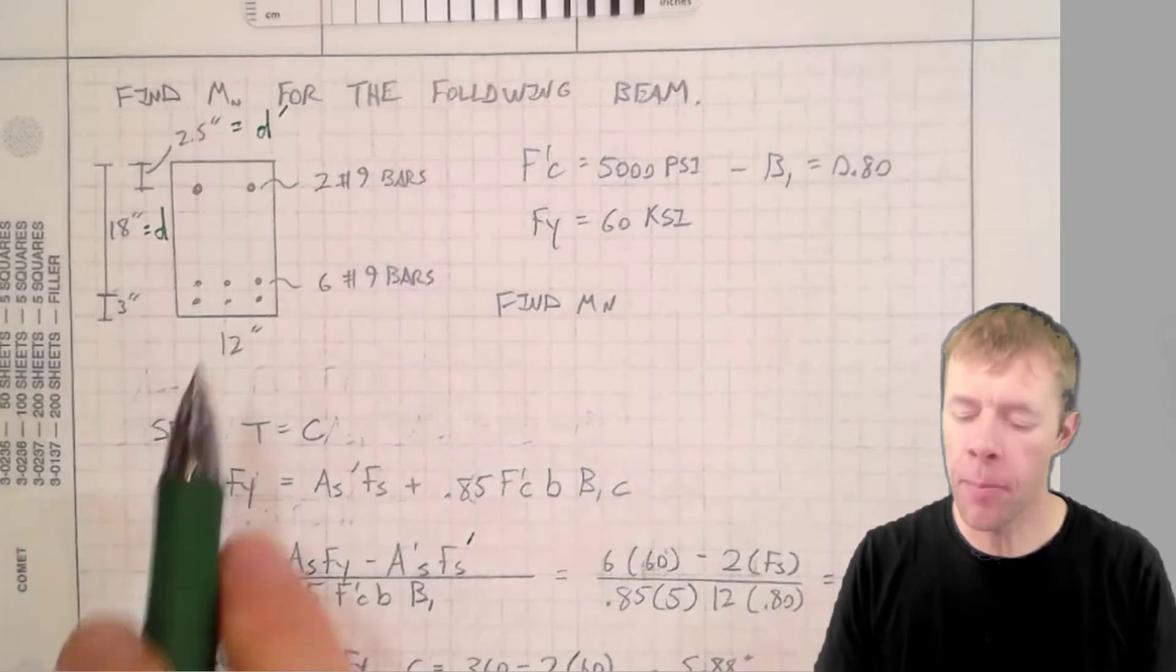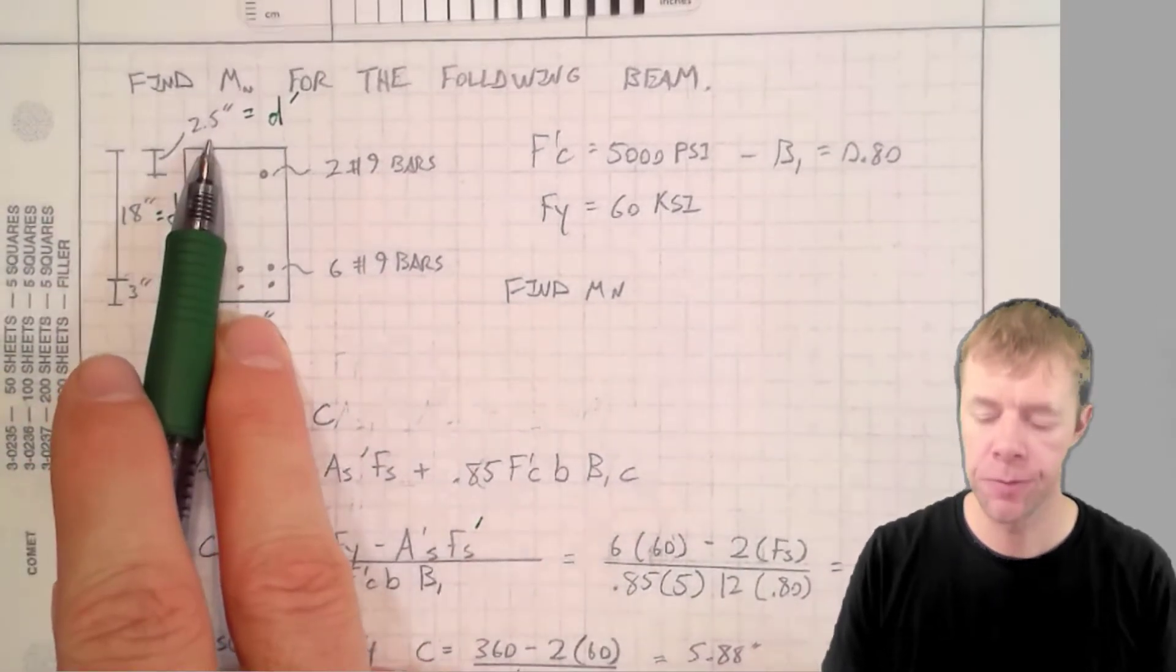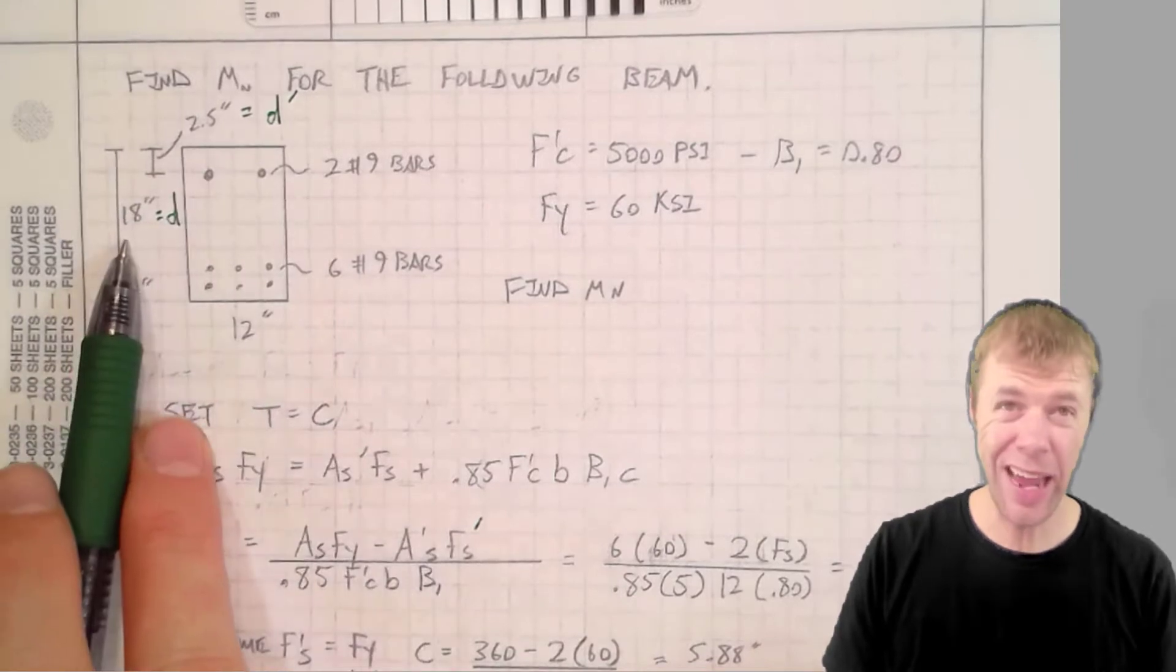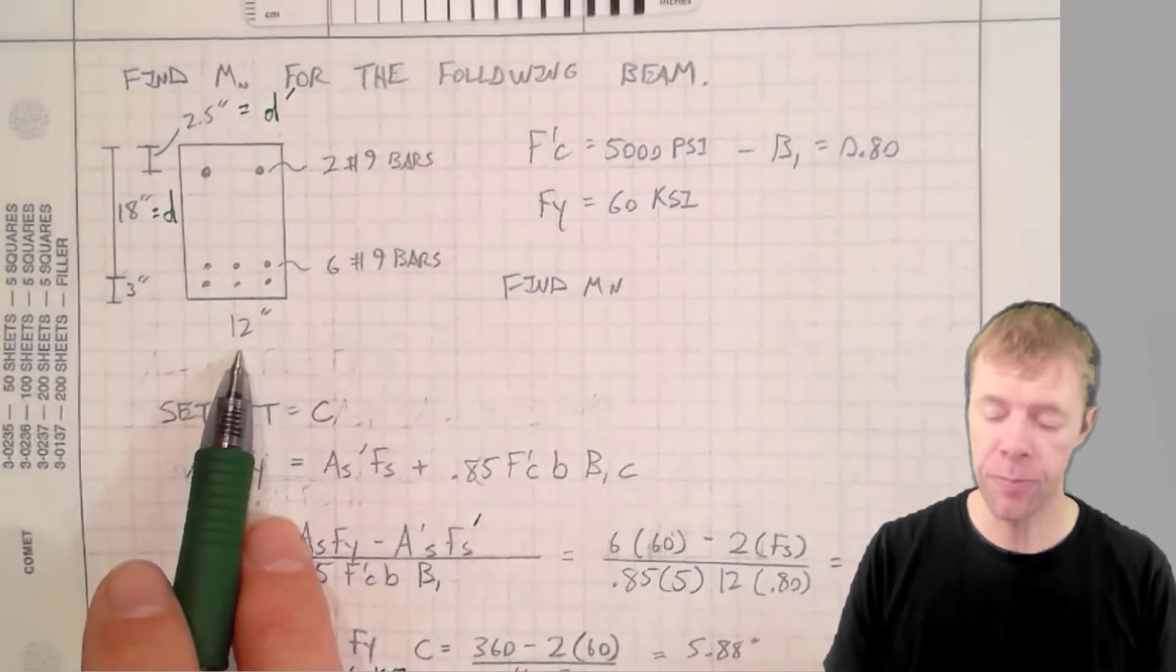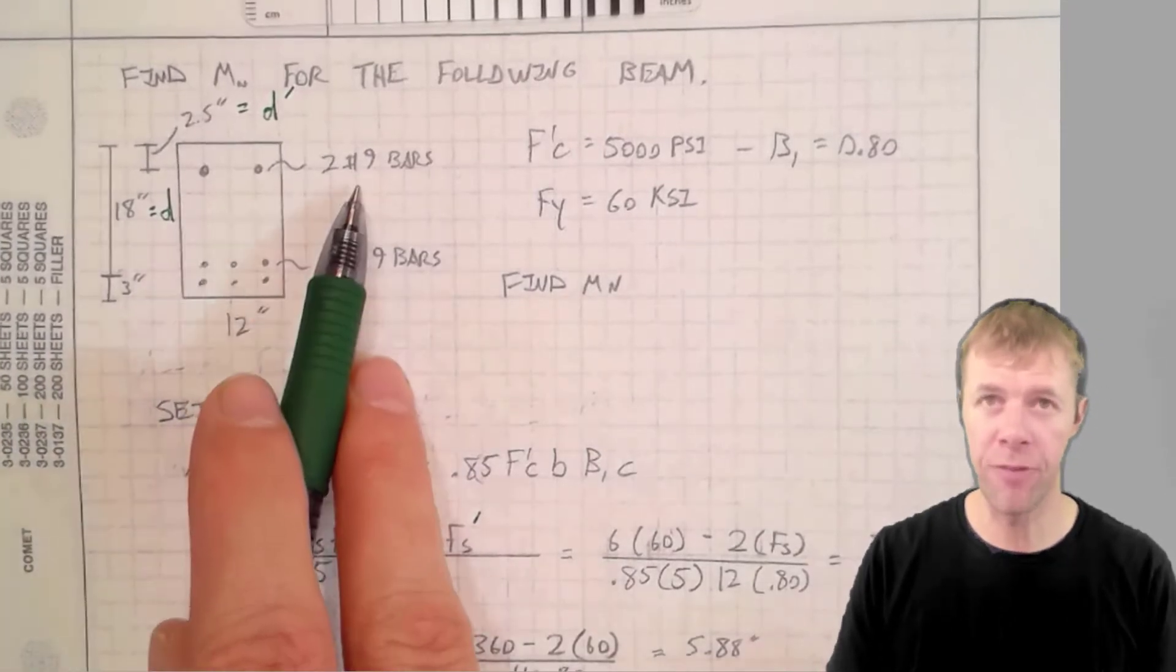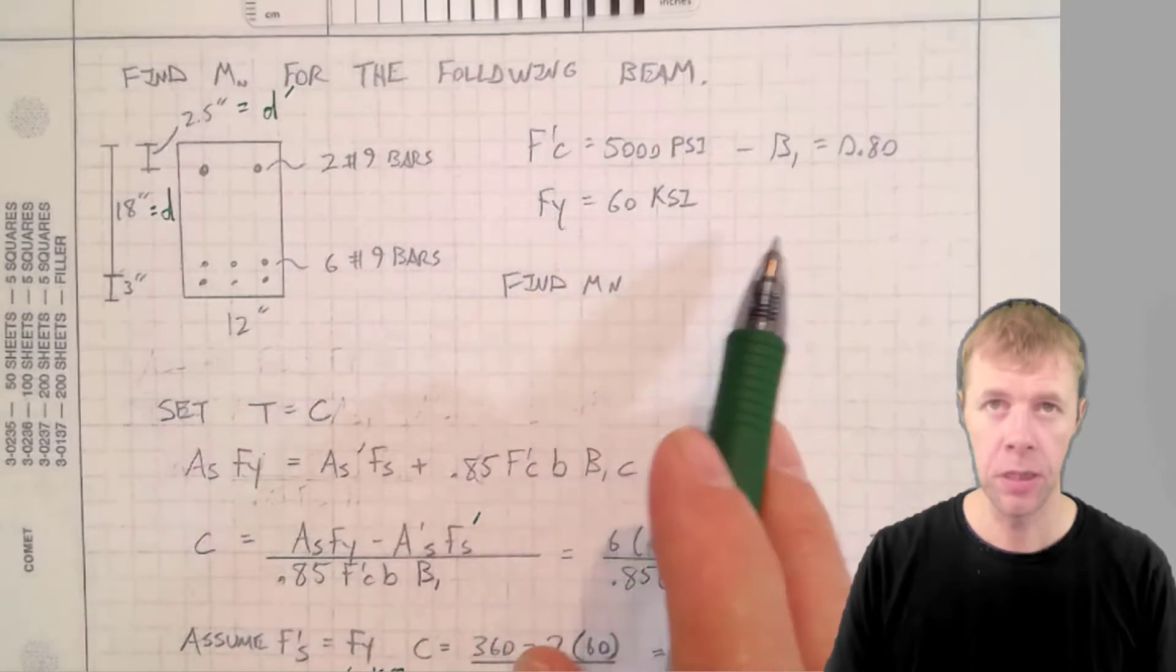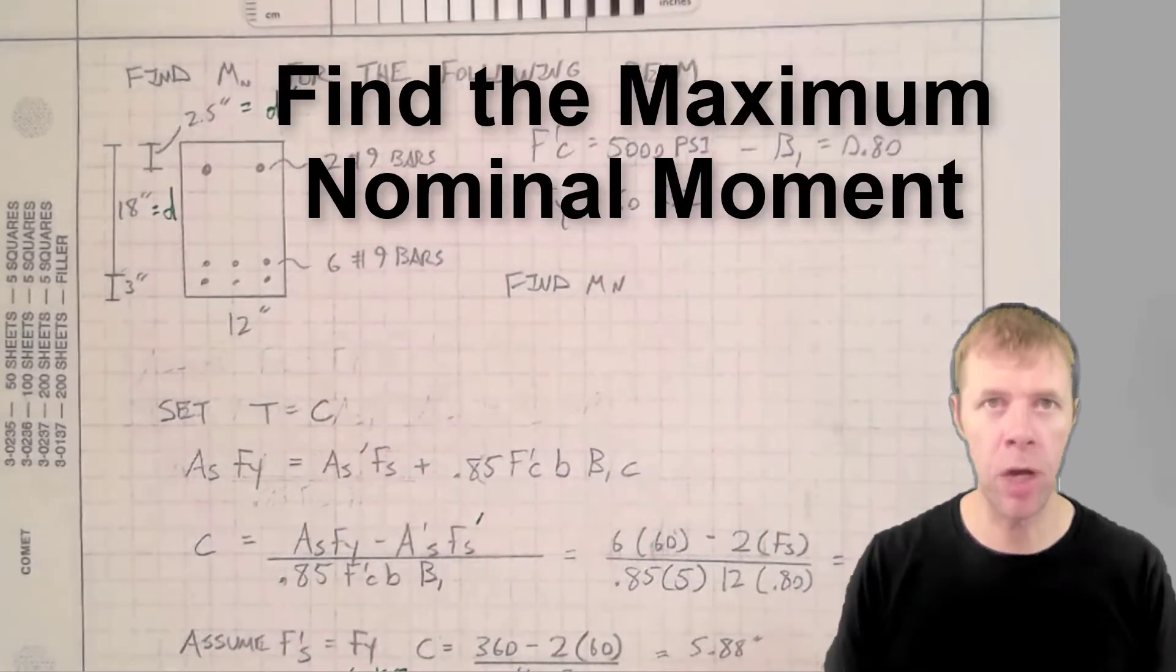We're going to find the nominal moment for this beam. The D prime is 2.5 inches. The D is 18 inches. The width is 12. This bottom dimension is 3. We have 6 number 9 bars, 2 number 9 bars, F prime C is 5,000, and FY is 60 KSI. Let's find this maximum nominal moment.